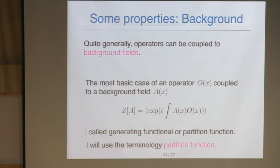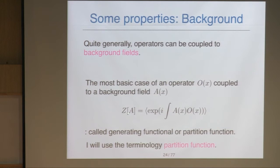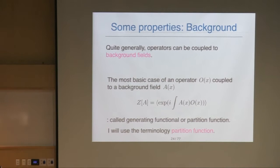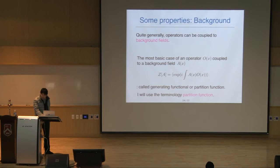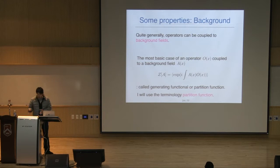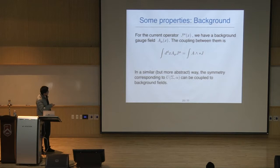This Z is a functional of background field A. For the current operator J_μ, the background field is just A_μ, and the coupling between them is A_μ J^μ — in the language of differential forms, it is A wedge the Hodge dual of the current. In a similar but more abstract way, the symmetry corresponding to U can be coupled to background fields.